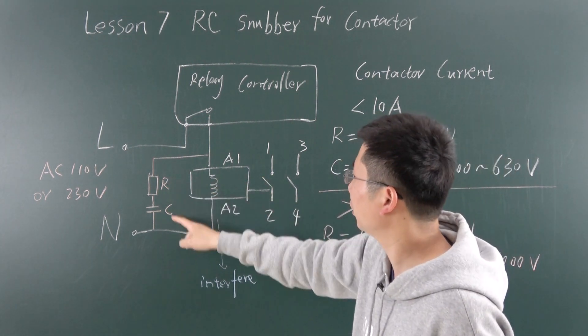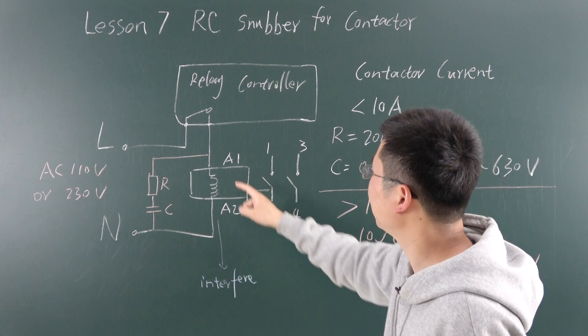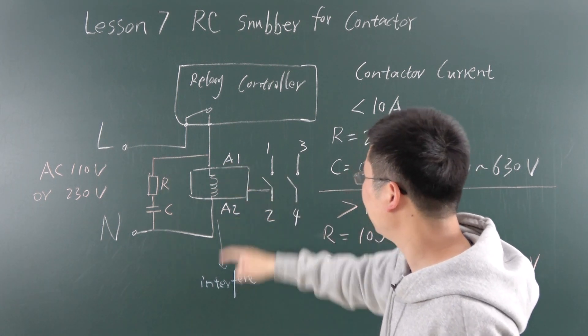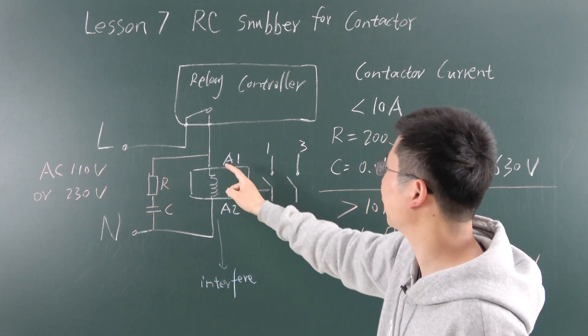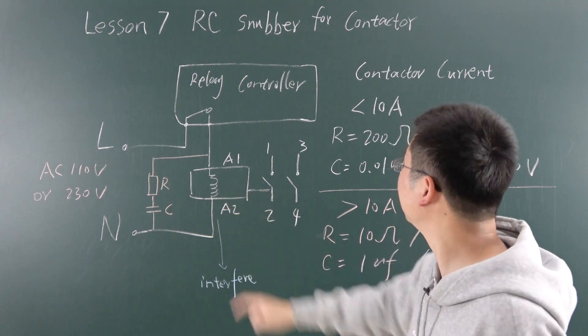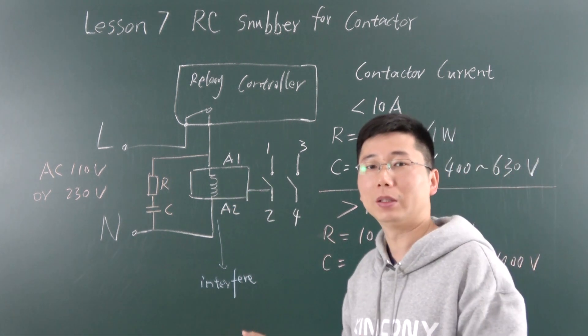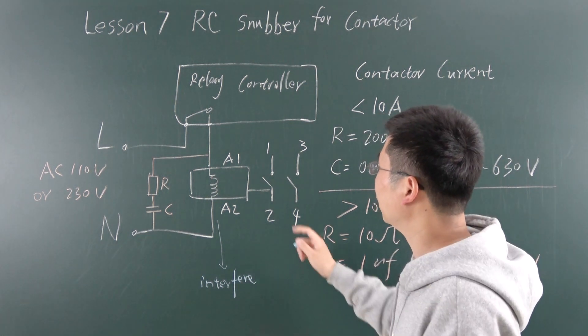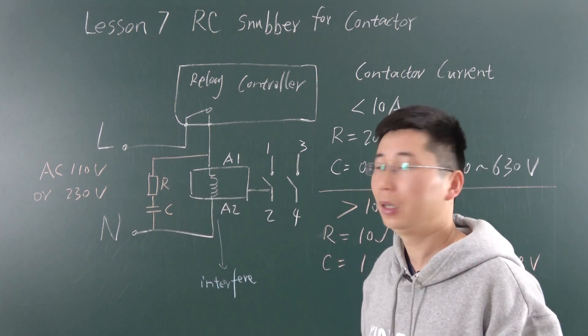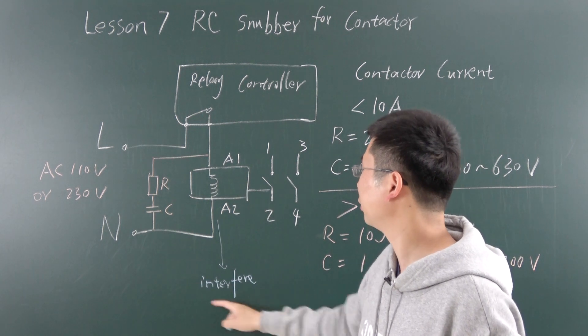We can add these two parts to reduce and cut the interference of the AC contactor. We will make an experiment later to show how to add this RC and reduce the interference.